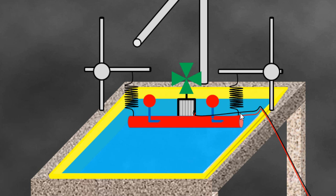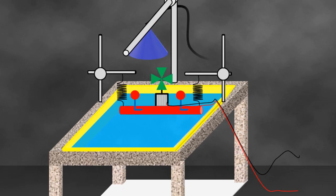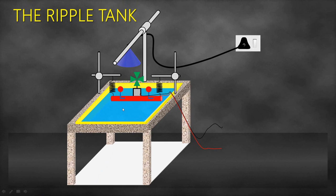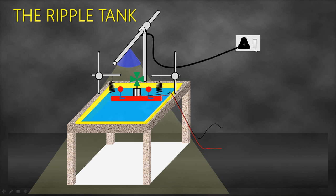We always connect a DC supply to the motor, since it's a DC motor. Above the water or above the tray, we need a light source. When switched on, it illuminates the water so that the waves formed here will have their shadows cast onto the screen.